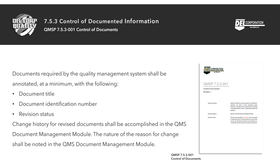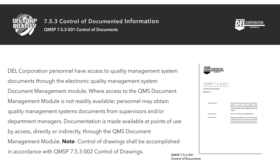Documents required by the quality management system shall be annotated at a minimum with the following: document title, document identification number, and revision status. Change history for revised documents shall be accomplished in the QMS document management module of QISS. The nature and reason for change shall be noted in the QMS document management module.